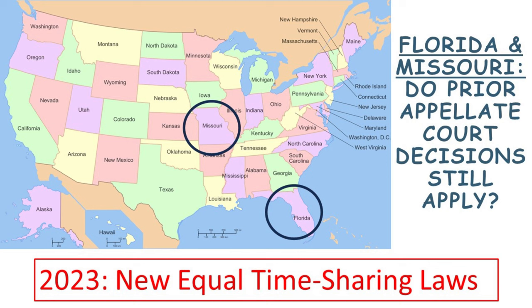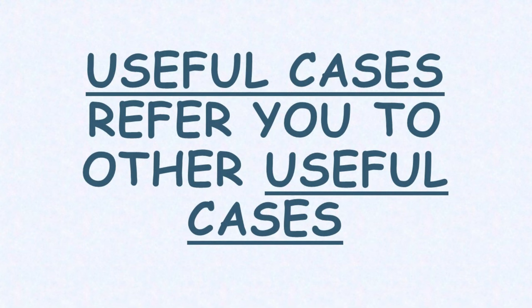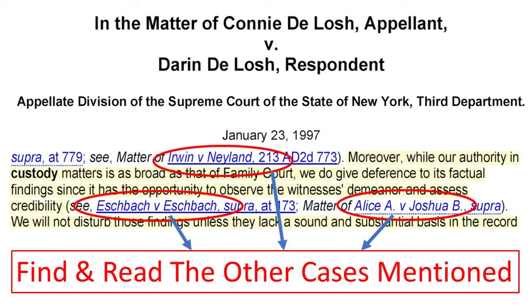You'll find many cases that aren't useful to you, but the useful ones will refer you to other relevant cases — these references can be a gold mine. For example, in the New York 1997 case of Deloche v. Deloche, the appellate court mentions previous cases like Irwin v. Nyland, Esbach v. Esbach, and Alice v. Joshua, which provide more insights. You can then directly search these other cases in Google Scholar. So even if it takes time to find one relevant case, the references within it can quickly lead you to five more, and these five can lead you to 20 more relevant cases. This creates a snowball effect that can help you research more and faster.